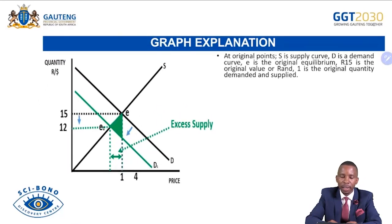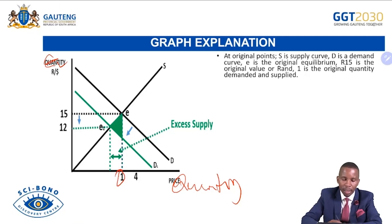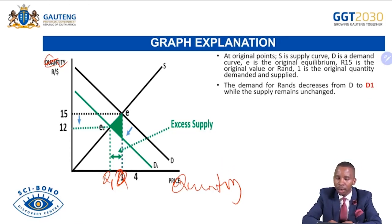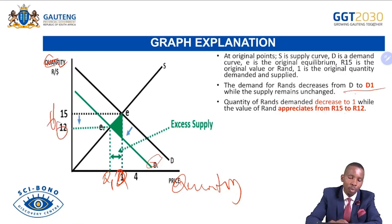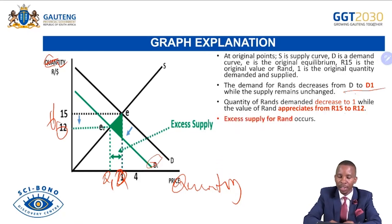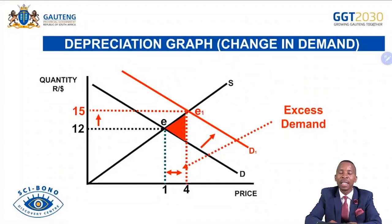Summarising the appreciation due to change in demand: S is supply, D is original demand, E is original equilibrium, 15 is the original rand value, Q is original quantity. The demand for rand decreased from D to D1, while supply remains unchanged. Quantity of rand demanded decreased to Q1, while the value of rand appreciates from 15 to 12. Excess supply of rand occurs. For depreciation: depreciation is the decrease in value of a country's currency in relation to another country's currency because of market forces. For depreciation to occur, there must be excess demand — the demand for rand is more than the supply.